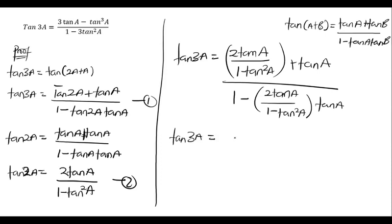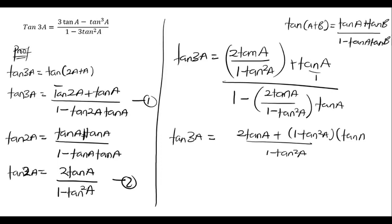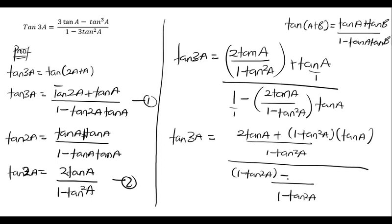So tan 3a equals — for the numerator, the LCM is 1 minus tan squared a. So 1 multiplied by 2 tan a gives us 2 tan a, plus — this has the LCM of 1, so it goes here — 1 minus tan squared a multiplied by tan a, all divided by the denominator. For the denominator, the LCM is also 1 minus tan squared a, giving us 1 minus tan squared a, then minus these multiplying terms: 2 tan squared a.